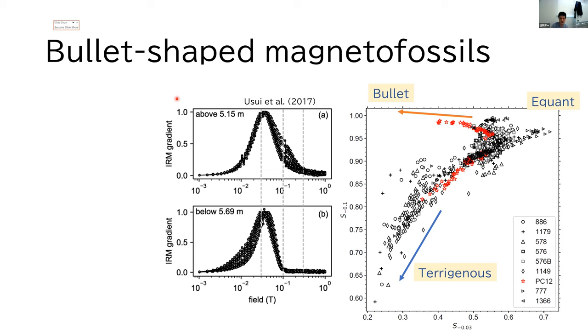is actually the core I have shown before. So from this, I conclude that bullet-shaped magnetofossils are rather an exception for pelagic red clay.